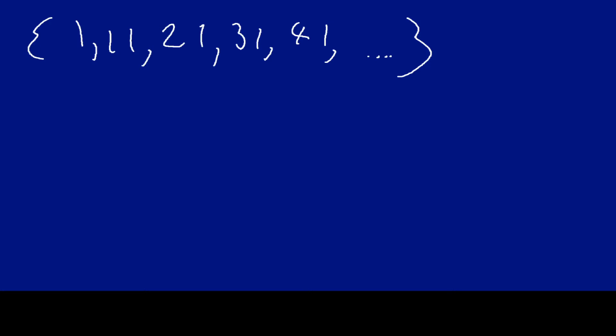Before we go any further, I want to just remind you of the generic formula for an explicit formula when it's arithmetic. It's going to be a sub n equals a sub 1 plus d times the quantity of n minus 1, like so.